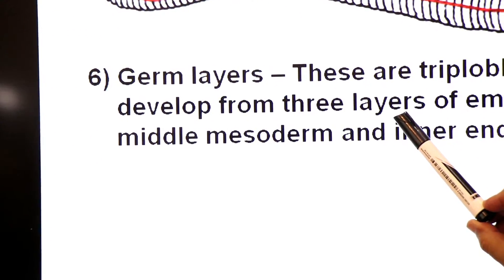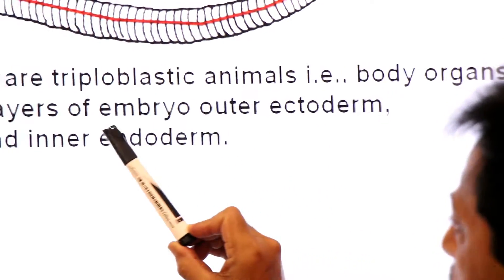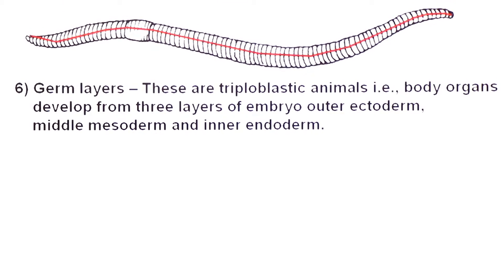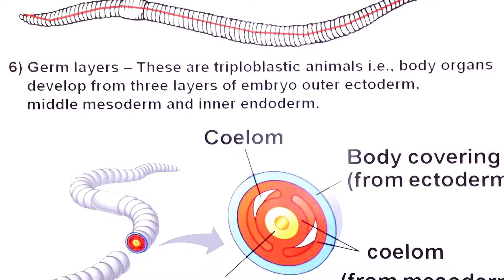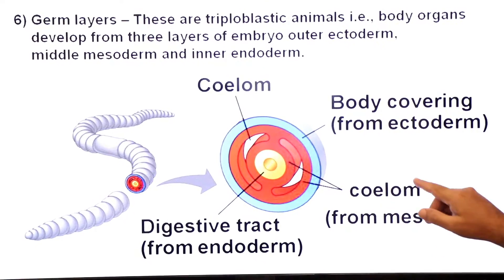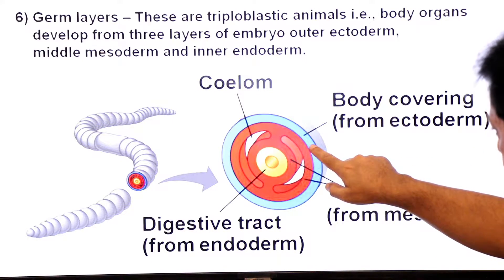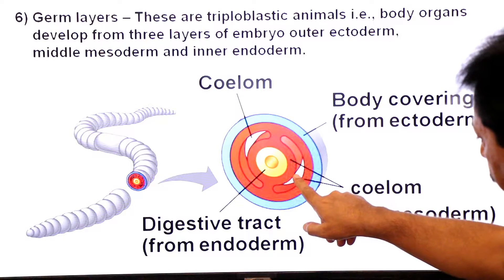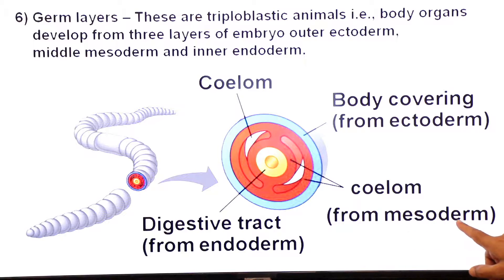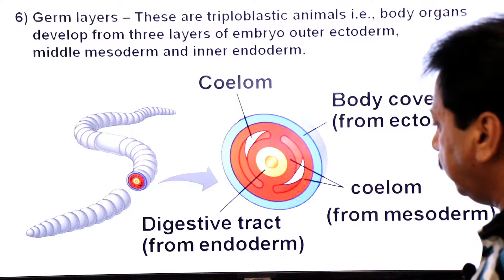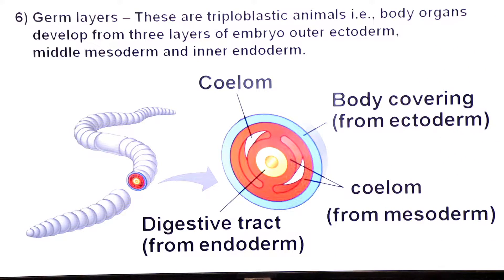So these are triploblastic animals — body organs develop from three layers of the embryo: the outer layer ectoderm, the middle layer mesoderm, and the inner layer endoderm. Looking at the cross section of the earthworm body wall: ectoderm is the outer layer and from it the body covering — epidermis — is derived. The body cavity coelom is derived from mesoderm.